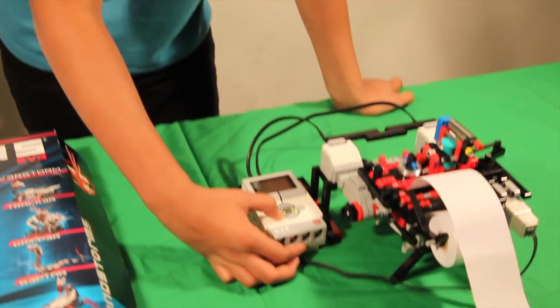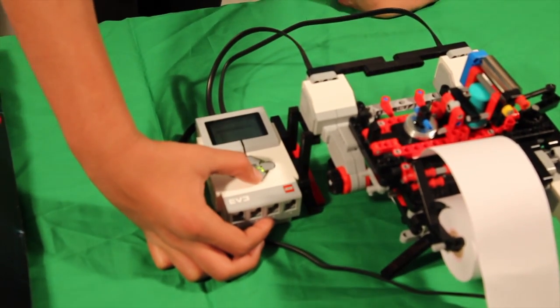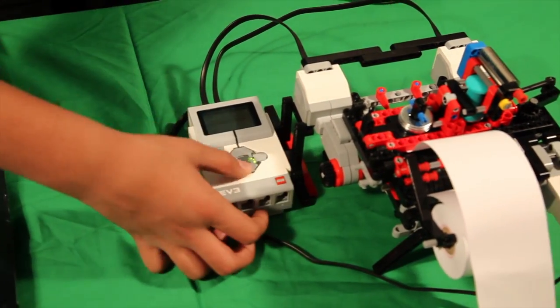Alright, so now I've programmed all the letters A through Z in this to be in Braille. Suppose like Y, the letter Y.